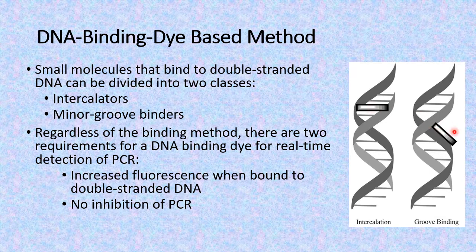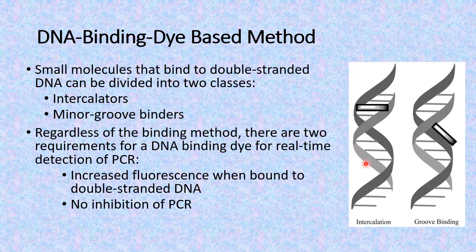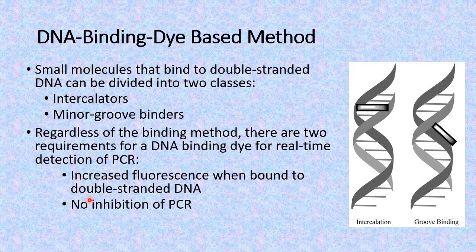At whichever point they bind, the two basic requirements of the chemical substance that can be used as a dye in this method of RT-PCR are: first, there should be an increase in fluorescence when it binds to the double-stranded DNA, because we will measure the actual amount of amplicons on the basis of the fluorescence produced in the system. And secondly, since they are chemical molecules, no inhibition of the basic polymerase chain reaction ought to take place. These dyes or chemical molecules used for this purpose must fulfill these two basic conditions.